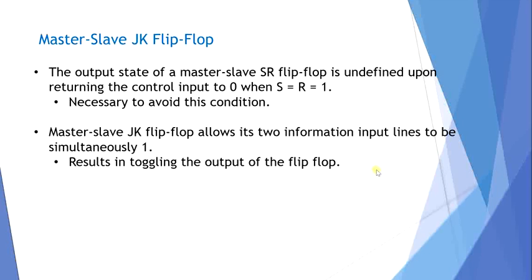The master-slave JK flip-flop will not allow its two inputs to be simultaneously 1. This results in toggling of the output: if the present state is 1, the next state is 0, and if the present state is 0, the next state is 1. We use the master-slave JK flip-flop to ensure toggling and avoid the undefined condition of S=R=1 in the master-slave SR flip-flop.